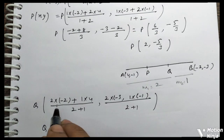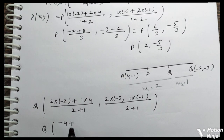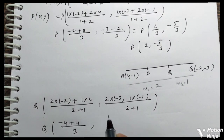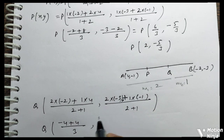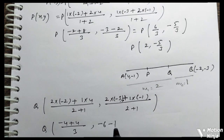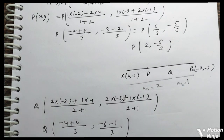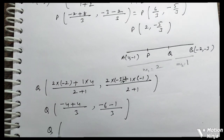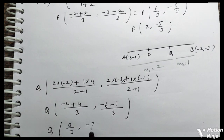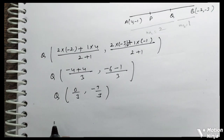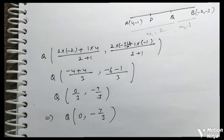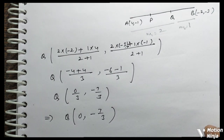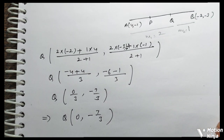x-coordinate of Q: (-4 + 4) / 3 = 0/3 = 0। Y-coordinate of Q: (-6 + (-1)) / 3 = -7/3। So Q के coordinates हैं: (0, -7/3)। तो trisection करने वाले दो points मिल गए — P(2, -5/3) और Q(0, -7/3)। 2nd question complete.